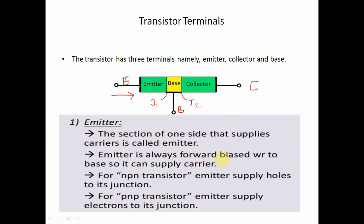The emitter is always forward biased with respect to the base. For an NPN transistor, the emitter supplies holes to its junction. And for a PNP transistor, the emitter supplies electrons to its junction.